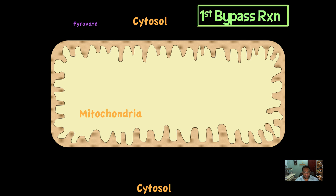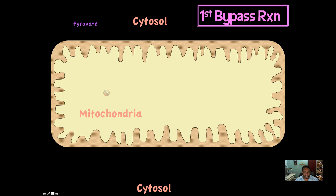In fact we start in the mitochondria. As you can see in this diagram, there's a nice mitochondria drawn for you. While I discuss the first bypass reaction, I want you to always be aware of where you are. This is the cytosol on the outside, and you have the mitochondrial inside — the outer membrane, the inner membrane, and then inside here will be the matrix.